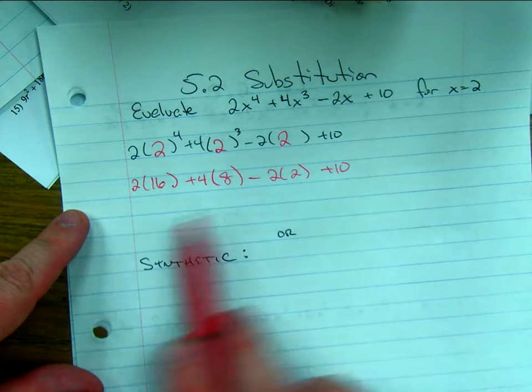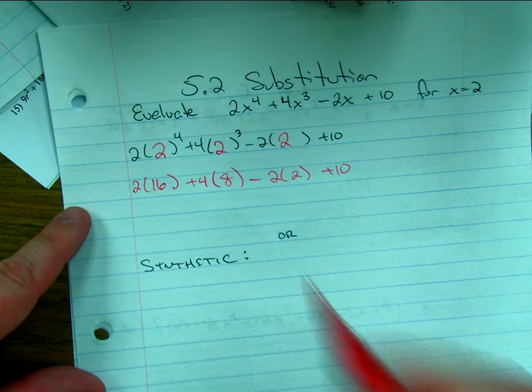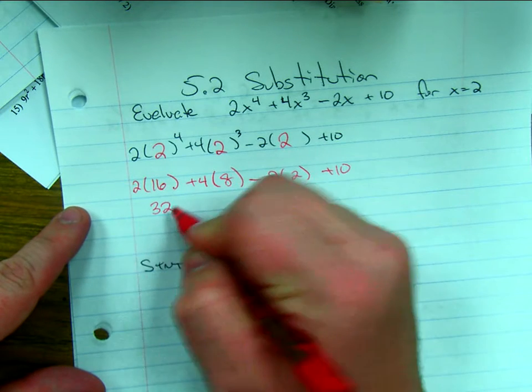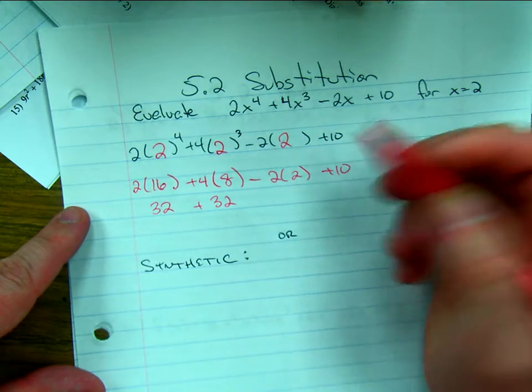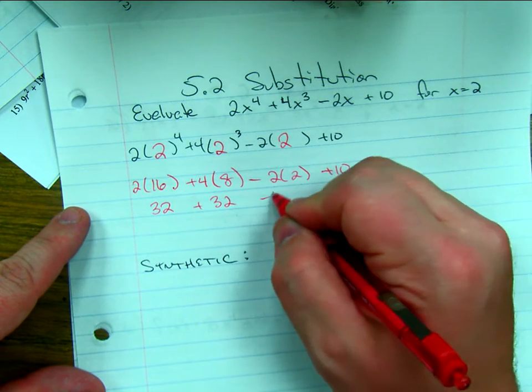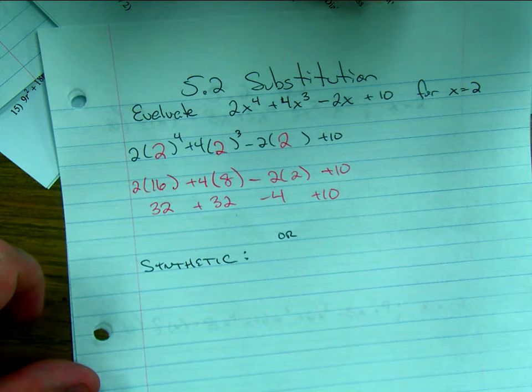Now I'm gonna do all my multiplication. I'm just doing this in order of PEMDAS, right? First I did my parentheses and exponents, now I'm gonna do my multiplications. I have 32, 4 times 8 also 32, negative 2 times 2 minus 4, plus 10.